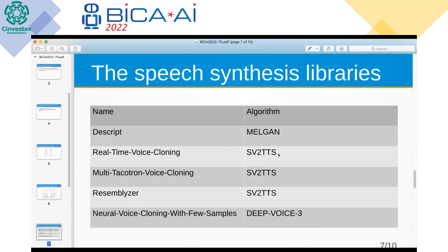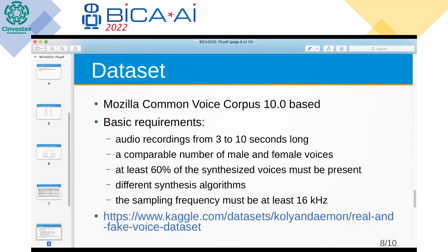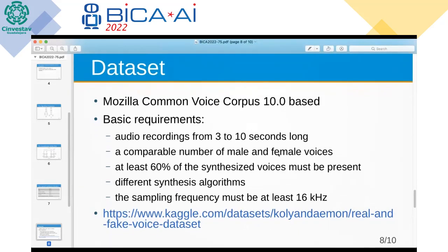The table shows the selected libraries we used. To test the performance of the synthesized voice recognition system, we assembled a dataset in English — currently English only. The existing Mozilla Common Voice dataset was taken as a basis; it contains more than two thousand hours of verified recordings in MP3 format, which we converted. The basic requirements for the dataset are presented here, and the last link is a link to the dataset we constructed for this neural network.